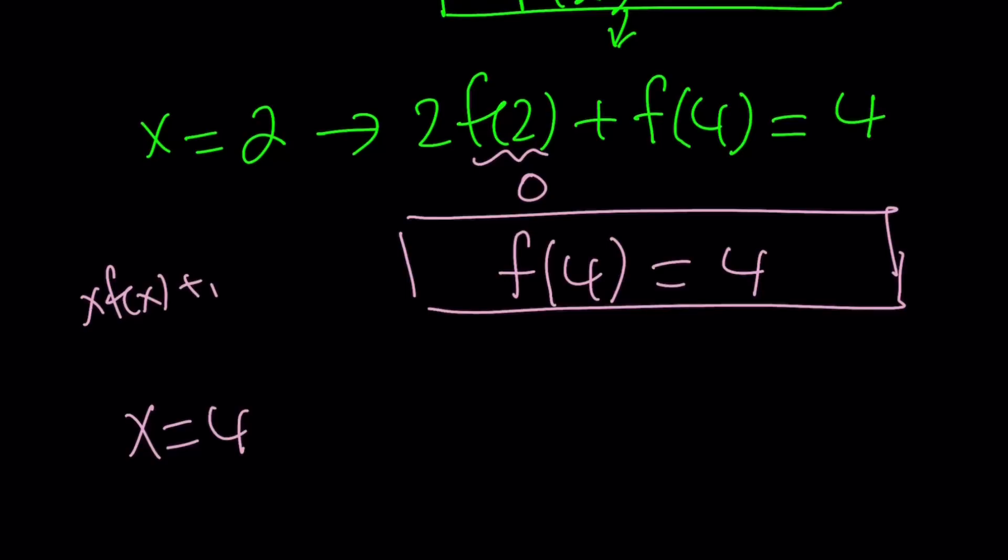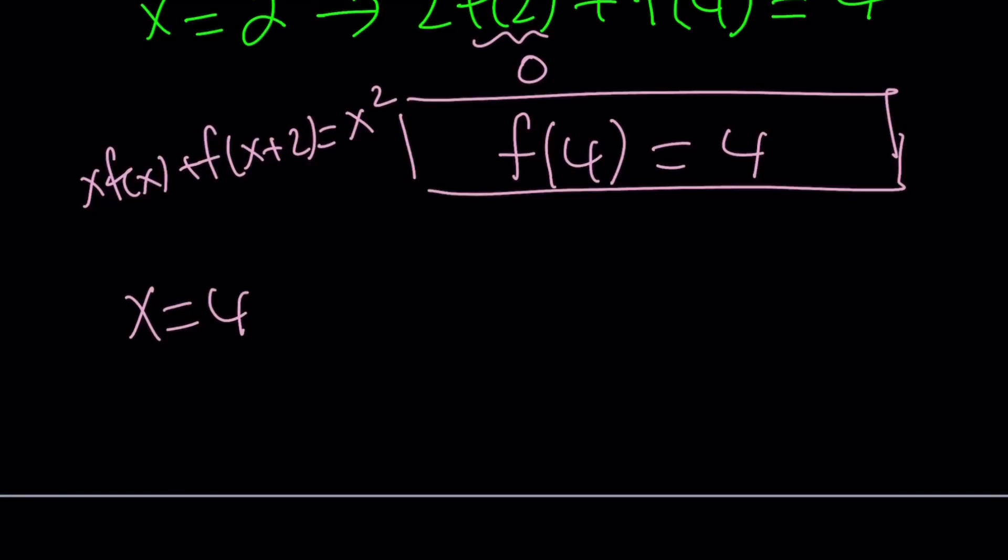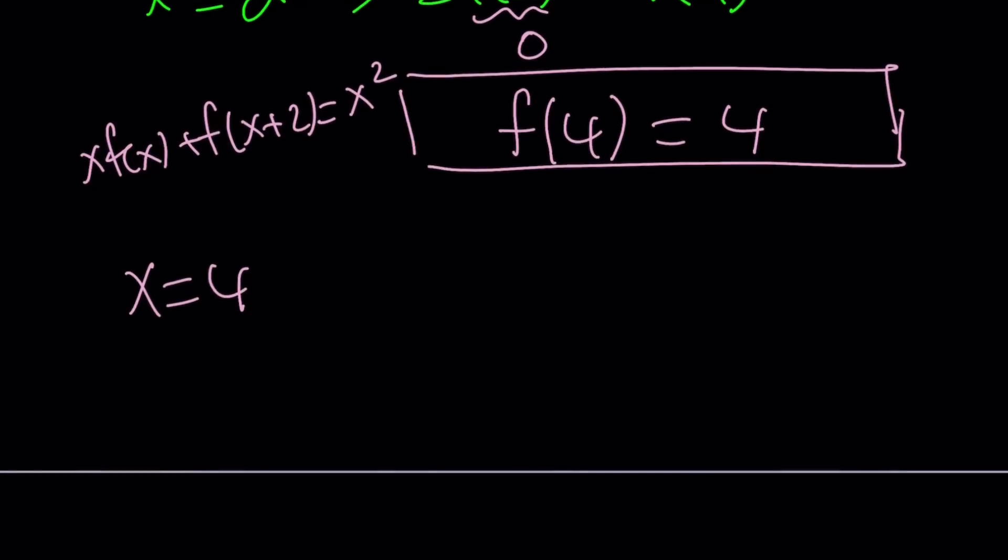xf of x plus f of x plus 2 equals x squared. And I could probably think of an alternative solution after I do this. Maybe I'll show you that as well. Anyways, if x is equal to 4, then we get 4 times f of 4 plus, now if you replace x with 4 here, you're going to get f of 6 equals 4 squared. That's going to be 16.